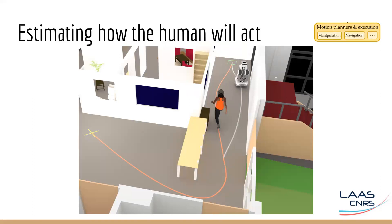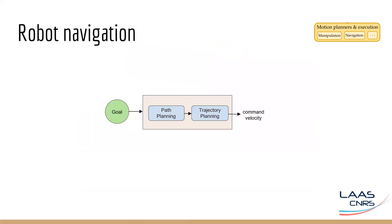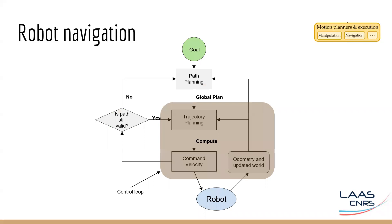I'll briefly describe robot navigation and how it works. Once the navigation goal is received by the system, it first does path planning, followed by trajectory planning, and finally computes the command velocity sent to the robot. The control loop then takes over and tries to follow the planned path avoiding obstacles. This involves re-planning of the trajectory based on updated odometry and world information. Path planning is not re-planned every instant, but only if it is not valid in some sense.